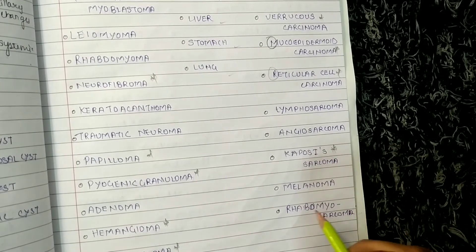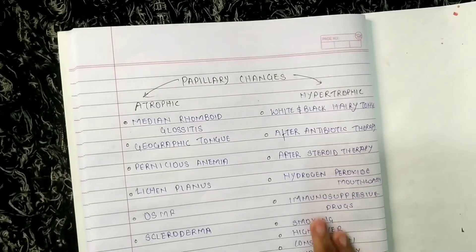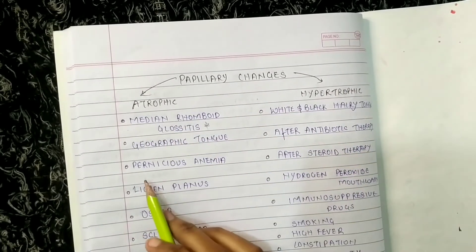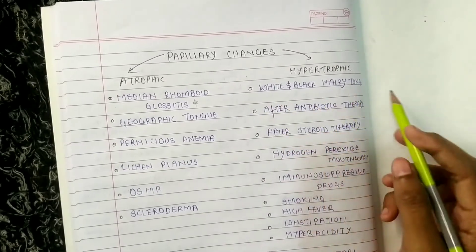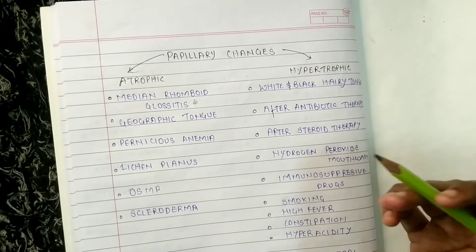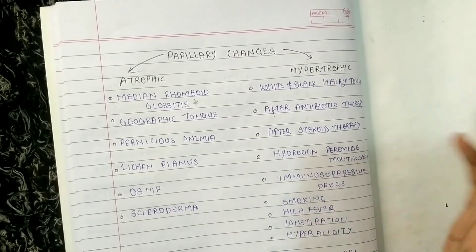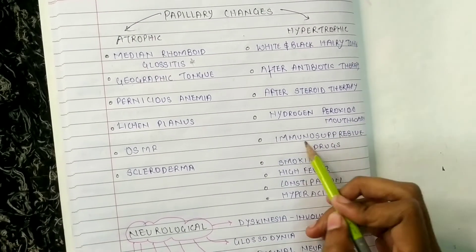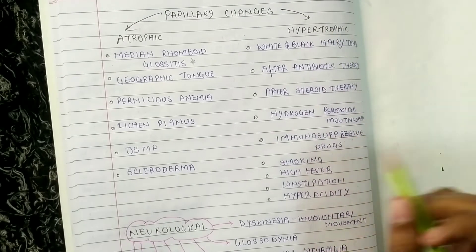Coming to papillary changes — if there are papillary changes in the tongue, we divide them into atrophic and hypertrophic. Atrophic includes median rhomboid glossitis, geographic tongue, pernicious anemia, lichen planus, OSMF, and scleroderma. Hypertrophic changes can be seen after antibiotic or steroid therapy, hydrogen peroxide mouthwash overuse, immunosuppressive drugs, smoking, high fever, constipation, and hyperacidity.